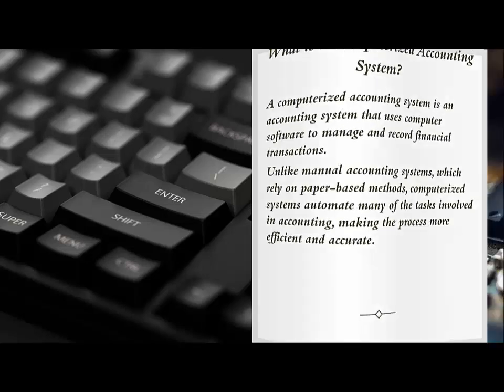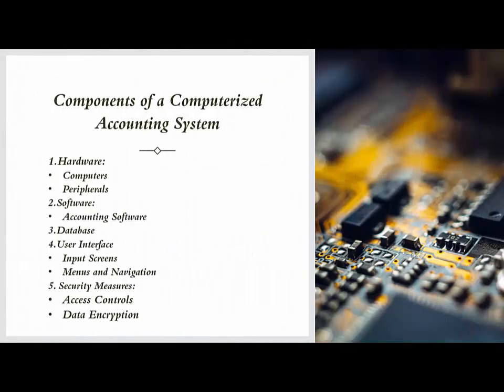Components of a computerized accounting system. Hardware: Computers, desktops, laptops, or servers that run the accounting software. Peripherals: Printers, scanners, and other devices used to input and output data.